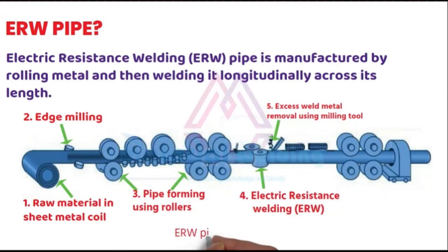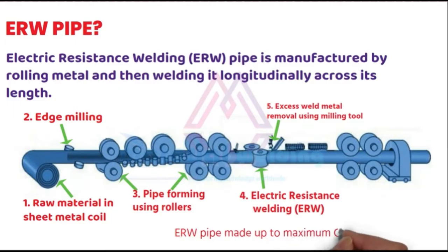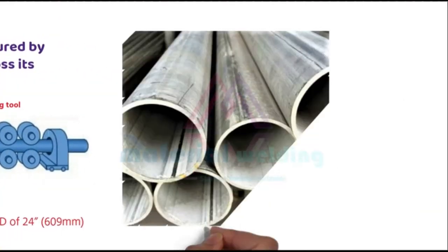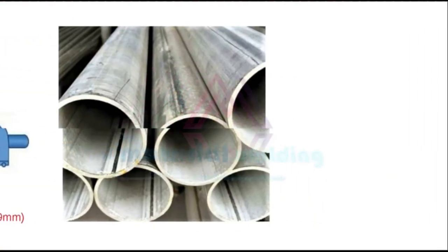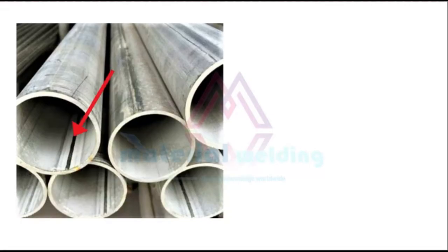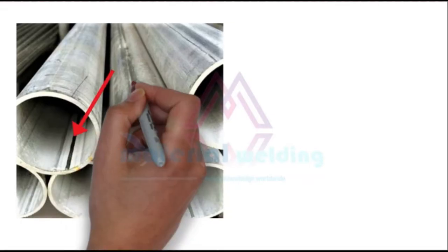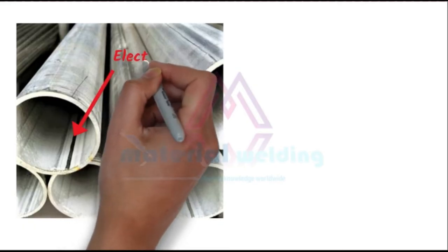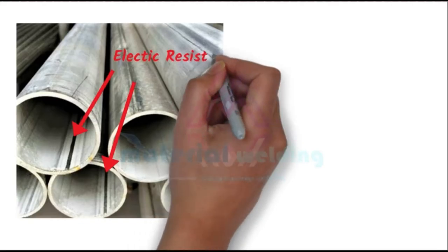The maximum diameter of ERW pipe is usually 24 inches or 609 millimeters. ERW pipes can be identified by checking the pipe internal where you can observe the weld seam with a narrow root penetration profile.